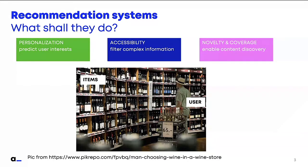Accessibility — and a third goal of recommendation systems is to enable discovery of new content, discovery of novel content. And also, from the point of view of the wine shop owner, you also want to cover your catalog, your items. You don't want to have wines standing around that are getting dust. So these are the goals of recommendation systems.